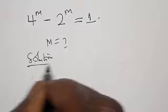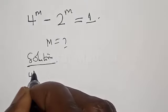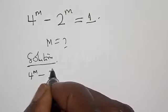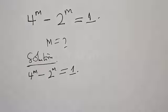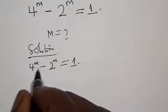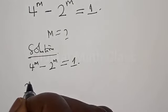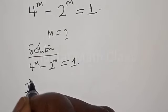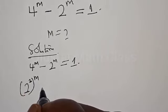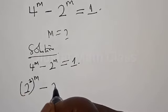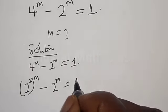Solution. We have 4 raised to power m minus 2 raised to power m equal to 1. Then, 4 raised to power m can be expressed as 2 raised to power 2, raised to power m, minus 2 raised to power m equal to 1.